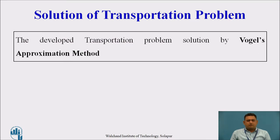In the earlier lecture, we have seen what is the transportation problem. Now, we will see the particular transportation problem which was solved by the least cost method and the northwest corner method. Now, we will solve the same problem with the Vogel's Approximation Method.